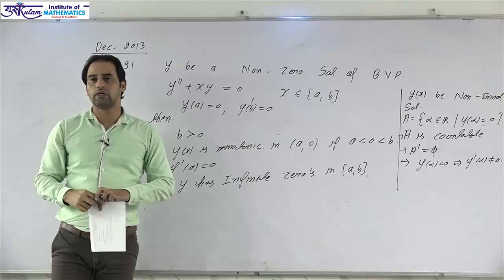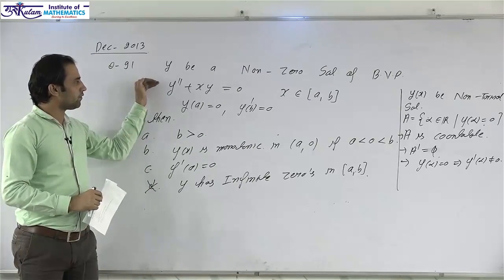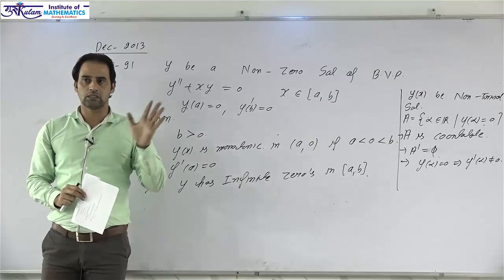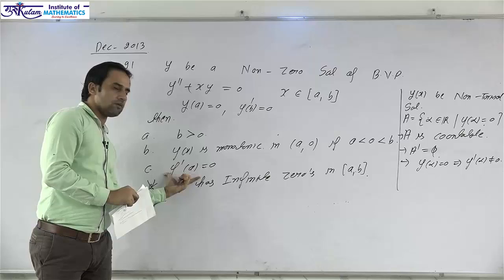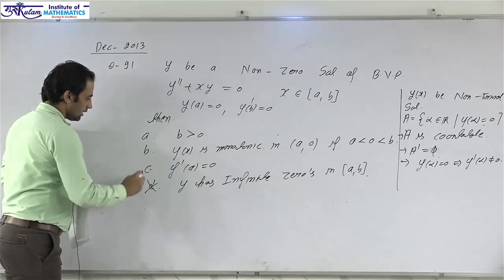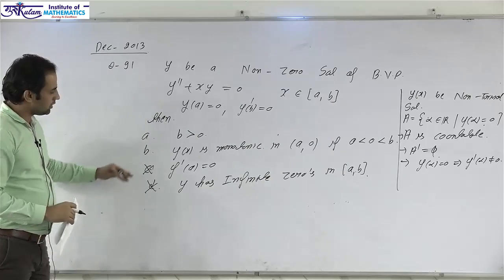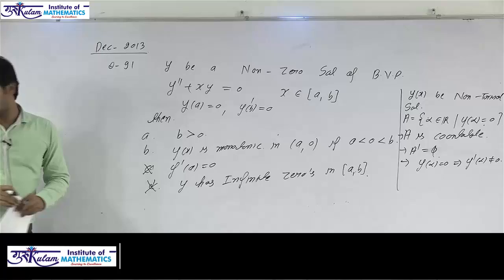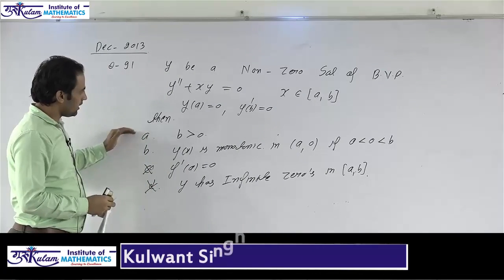Also, we know that the zeros of any non-trivial solution of a second-order linear differential equation are simple zeros. That is, if y(a) = 0, then y'(a) ≠ 0. So option C, which states y'(a) = 0, is again incorrect. Therefore, options C and D are both incorrect.